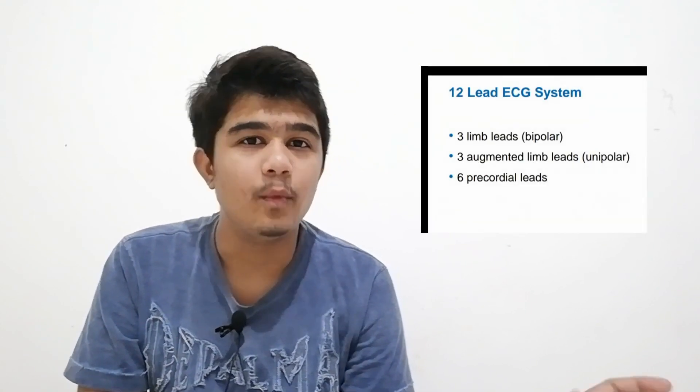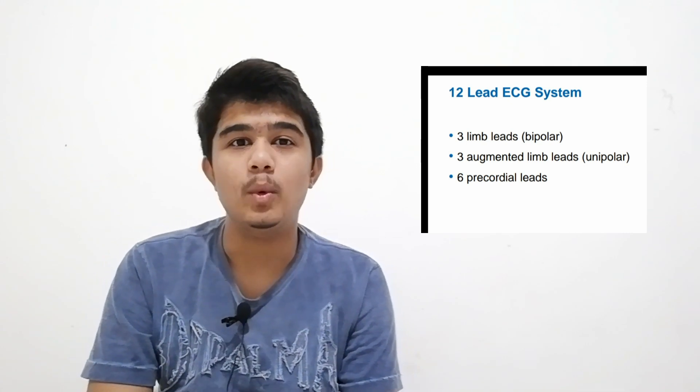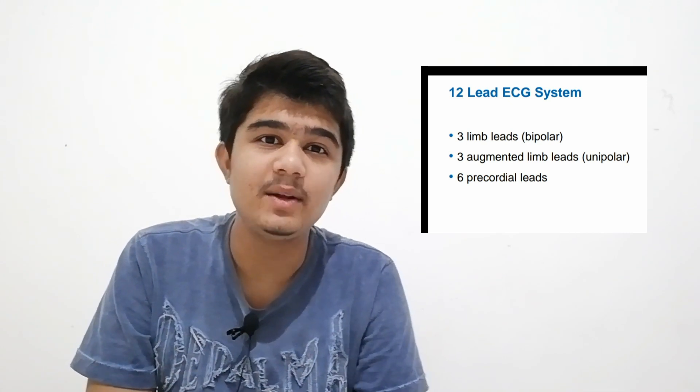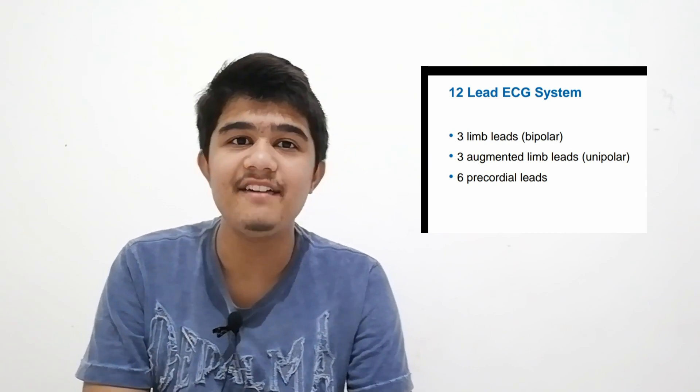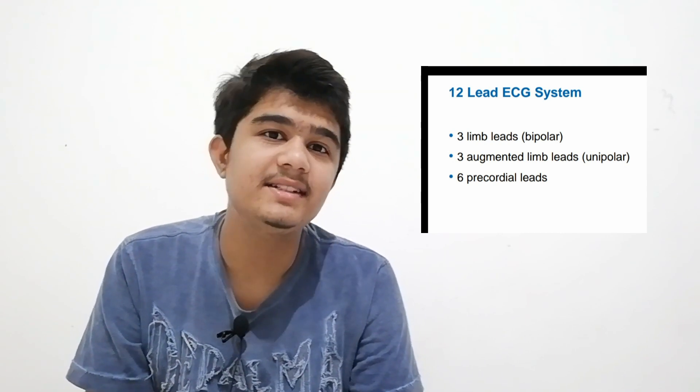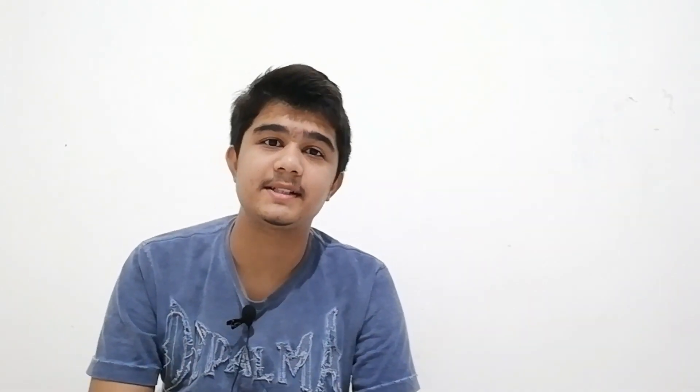Now for measuring that, leads are needed. Those leads are 12 in number and classified into three groups. One is the limb leads: lead 1, 2, and 3. Second is the augmented leads: AVR, AVL, and AVF. Third are the chest leads: V1 to V6.